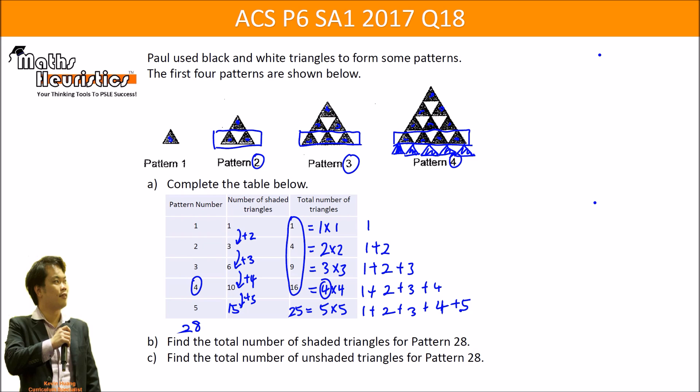So the idea here is you want to express it in a way that can be calculated from the pattern number. And what can be observed? The last number here is always equal to that pattern number. So if this pattern number is 28, it can be expressed as 1 plus 2 plus 3 plus 4 all the way up to 28.